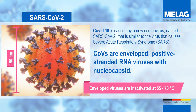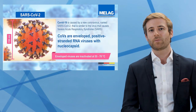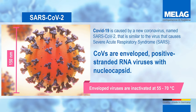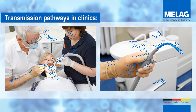SARS-CoV-2 is similar to the virus that causes SARS. Coronaviruses are enveloped positive-stranded RNA viruses with nucleocapsid. So we can be sure that the virus is already inactivated at a temperature of 55 to 70 degrees Celsius. Thus the virus does not pose a major challenge to instrument decontamination with automatic washer disinfectors and autoclaves in clinics. However, there are various transmission pathways in medical practices and clinics, including droplet infection through spray mist cloud in a dental clinic, smear infection through shaking hands, and spread through surfaces of furniture, door handles, and instruments.